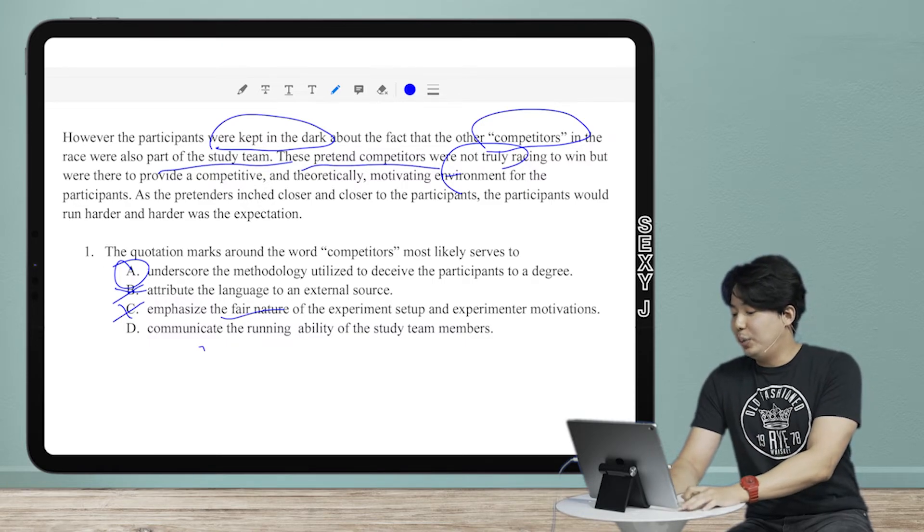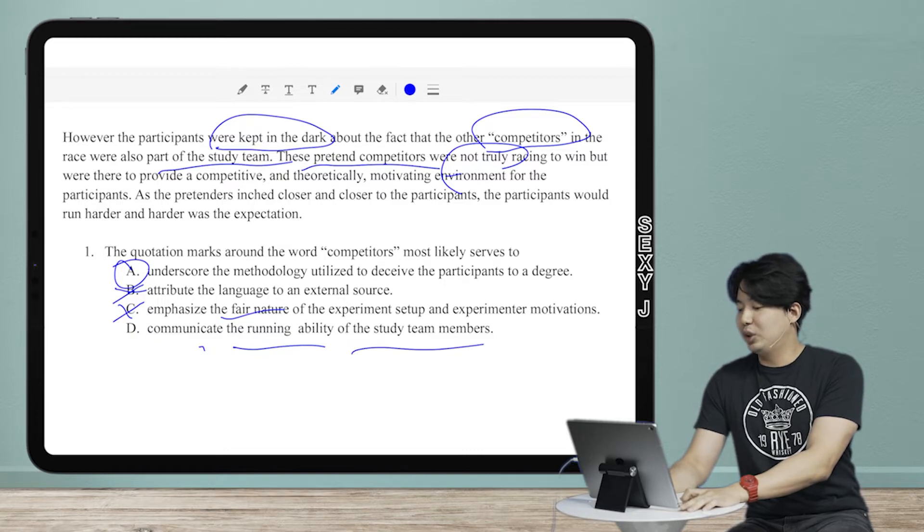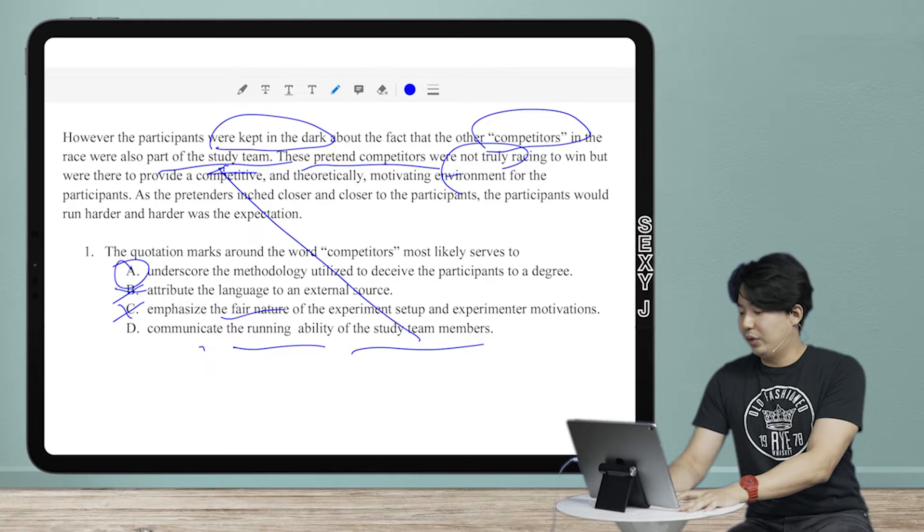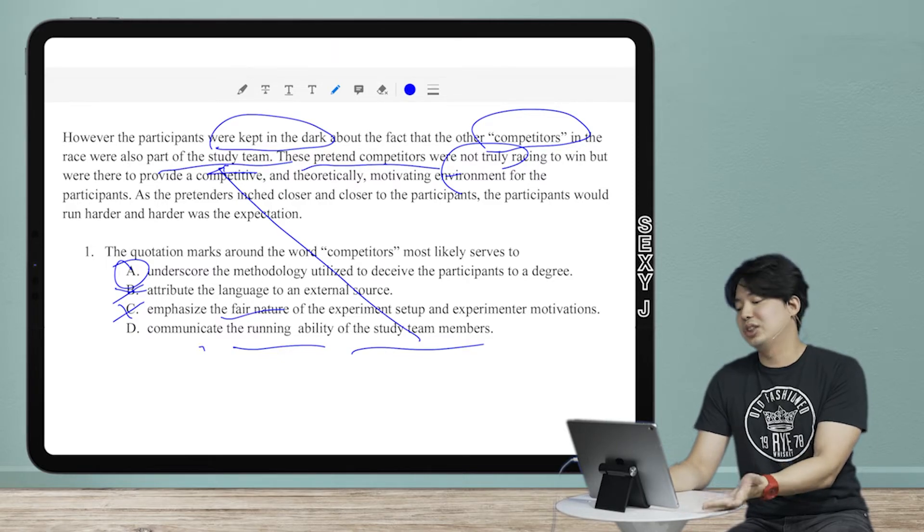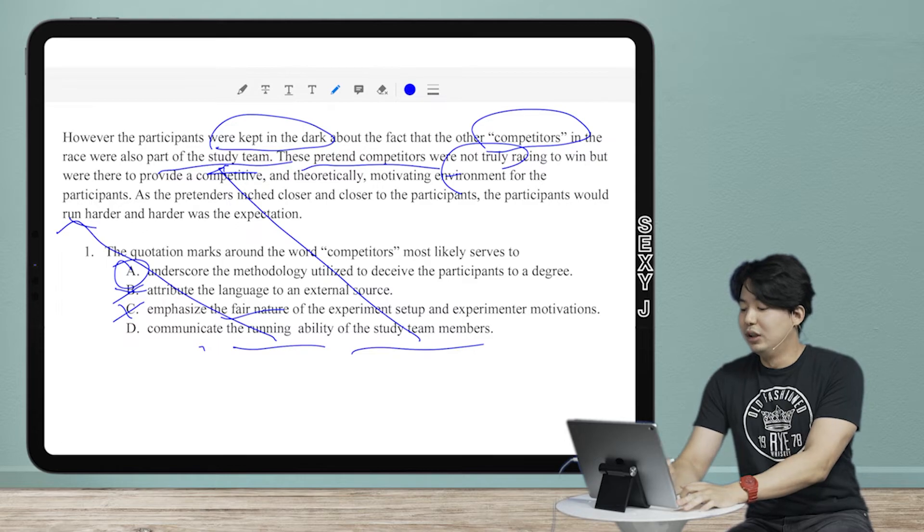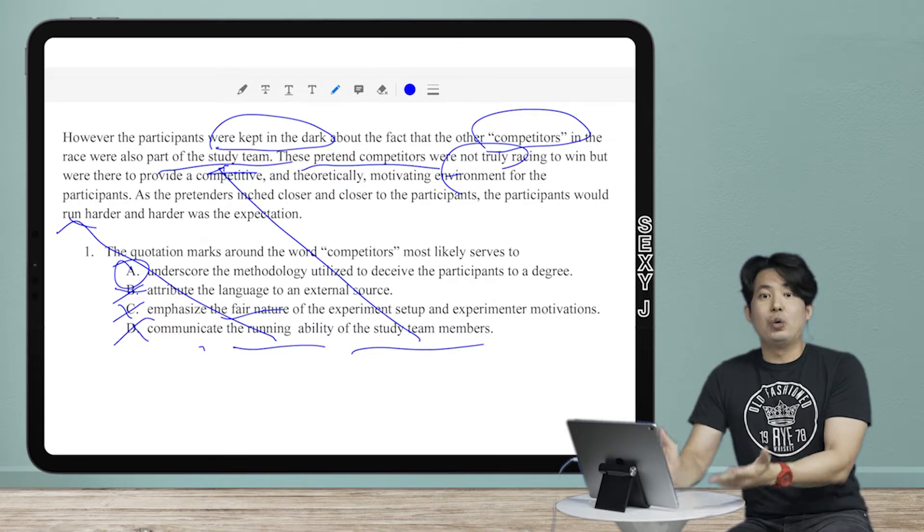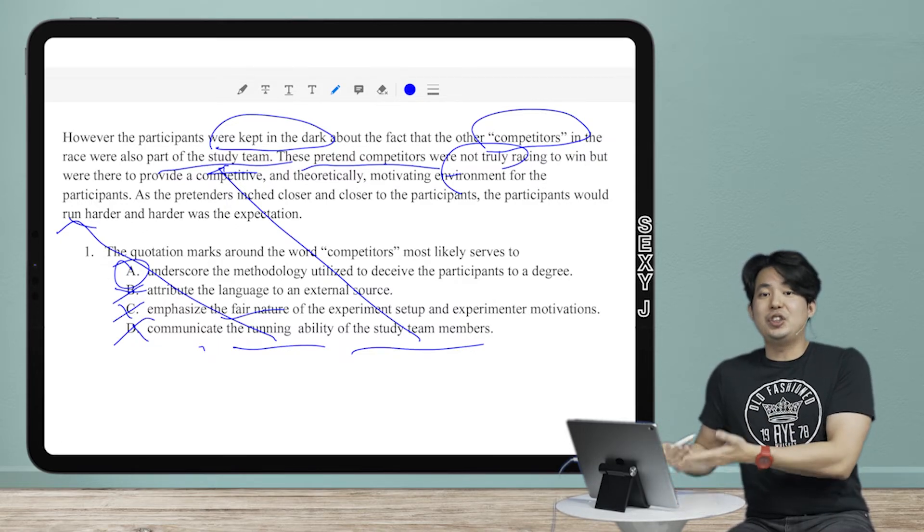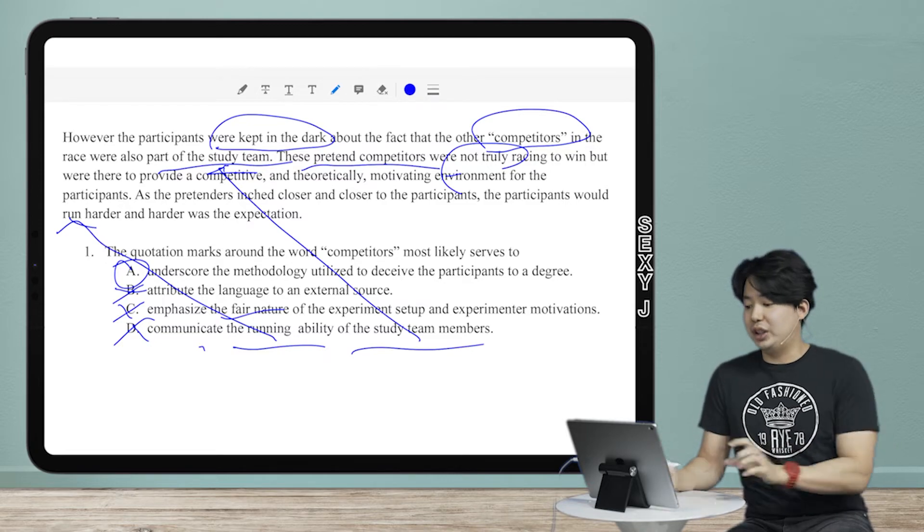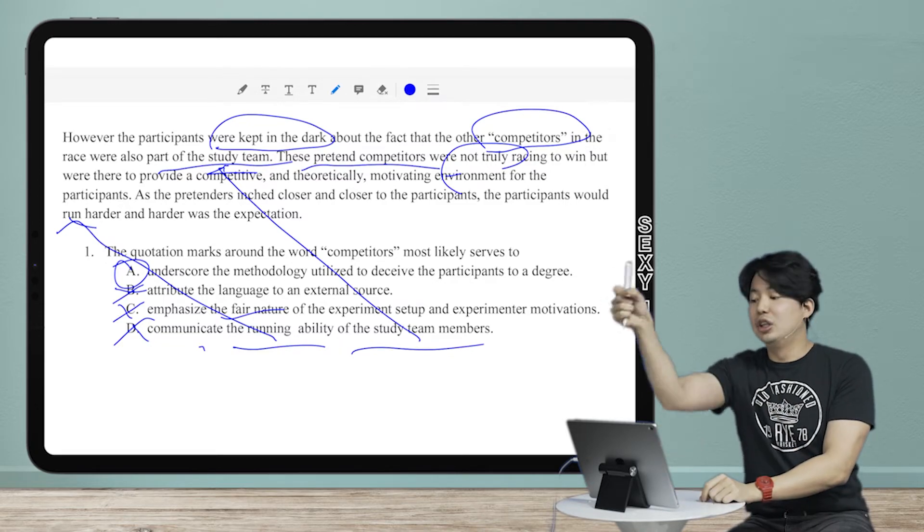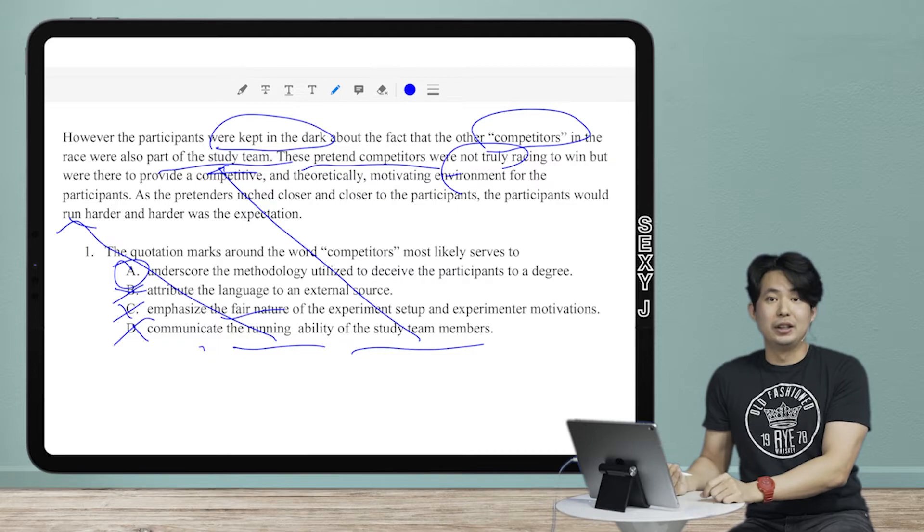And then D, communicate the running ability of study team members. Well they are running. We do have study team members. So I saw those words in the passage, like right there, right? And I also saw like running, or I said racing. It's the same thing, right? Oh I do have running. So that's the trap answer I made. Why? Because that's how College Board and ACT make their trap answers. They take the language from the passage, just dump it in the answer choice and hope you pick it.